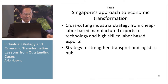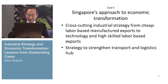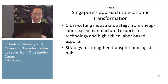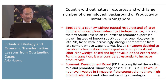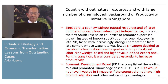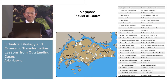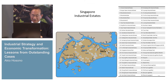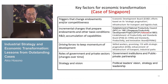The fifth case is Singapore's approach to economic transformation. Singapore had a very interesting strategy — particularly a cross-cutting industrial strategy, not sector-targeting, moving from cheap-labor-based manufacturing to technology and high-skilled-labor-based exports. Singapore is a country without natural resources, and when it got independence, there was a large number of unemployed. The Economic Development Board played a key role. There are very interesting institutional developments, including the introduction of 5S or quality management in Singapore, along with industrial estates.